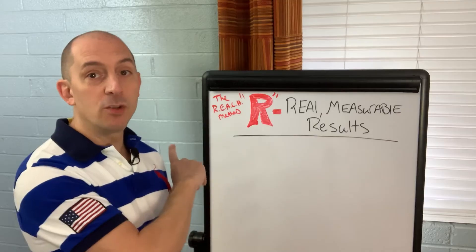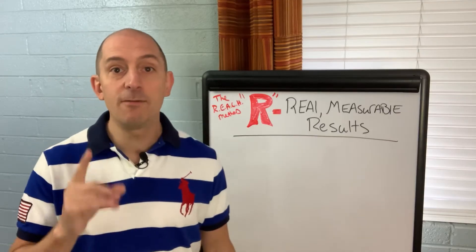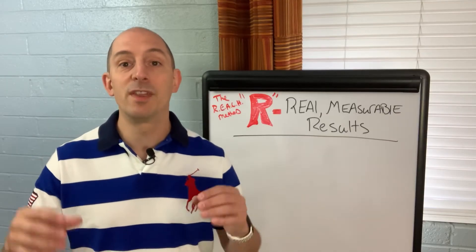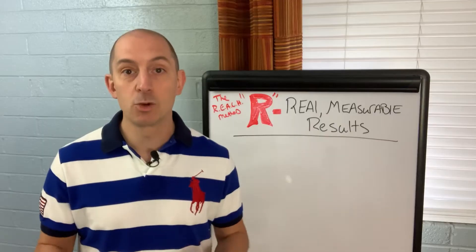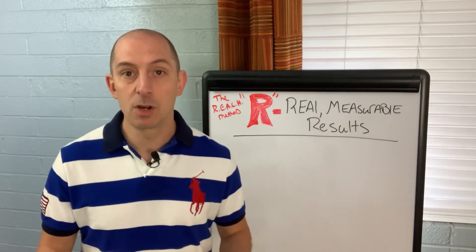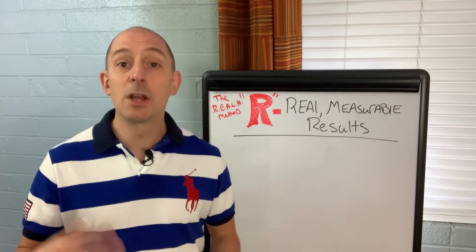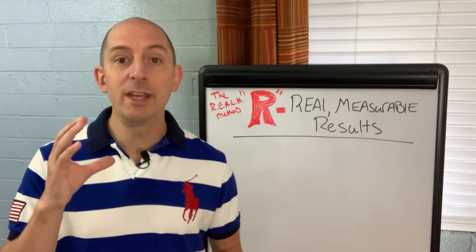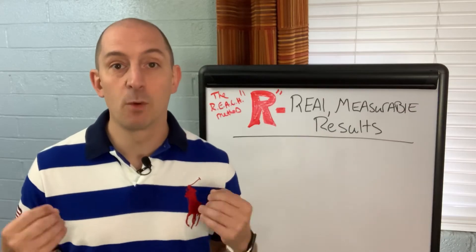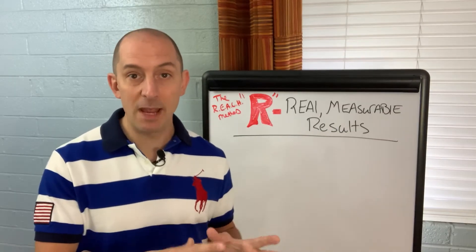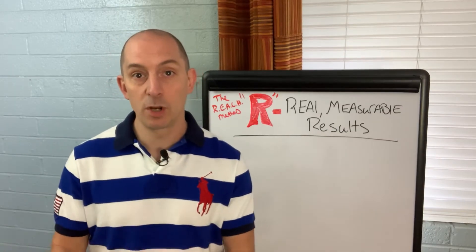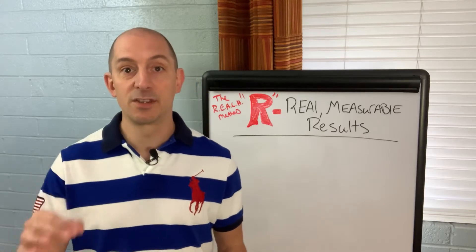So in the REACH method, the R, the very first thing is coming up with a real measurable result or outcome that you get for your clients. Because here's the secret. Your ideal client only cares about what's in it for them. Do you solve their pain point and get them to where they want to go in a clear, concise manner?